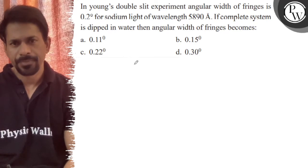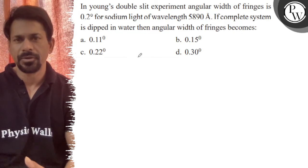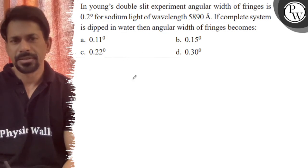Hello, let's see the question in the YDSE. Angular width of fringes is 0.2 degrees for sodium light of wavelength 5890 angstroms. If the complete system is dipped in water, then angular width is what?